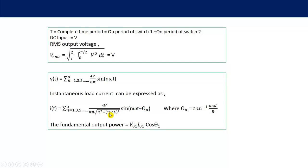For N = 1, we get the fundamental component. The fundamental output power is V_01 times I_01 times cos(θ_1), where cos(θ_1) is the power factor. So real — or active — power is V_01 × I_01 × cos(θ_1). The remaining harmonic powers are dissipated across the load, so we will try to remove those harmonics.